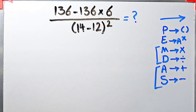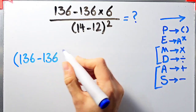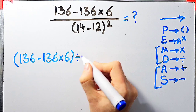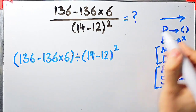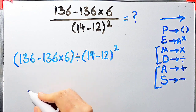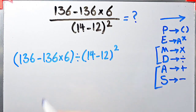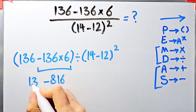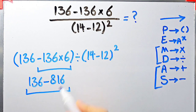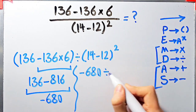Let's simplify and solve this question step by step. We have: 136 minus 136 times 6, then divided by open parentheses 14 minus 12 close parentheses, then all of them to the power of 2. According to the PEMDAS rule, first we simplify the parentheses. Inside these parentheses we have subtraction and multiplication. We simplify the multiplication first because multiplication has higher priority than subtraction. Negative 136 times 6 equals negative 816. Now we have 136 minus 816, which equals negative 680.